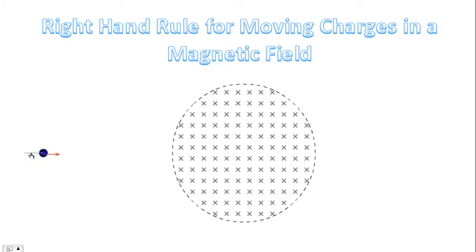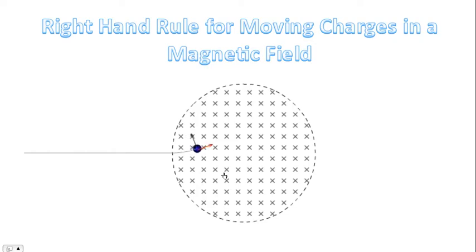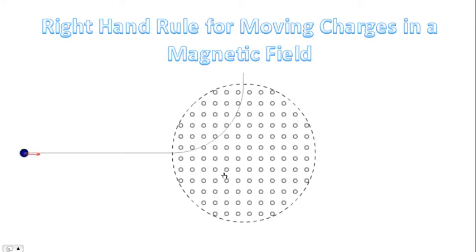Good morning! Today we are going to investigate what happens to a positively charged particle as it encounters a magnetic field. As you can see, the charged particle deflects in a magnetic field. And the question is, can we predict the direction the charged particle will deflect in? So that's our goal today.